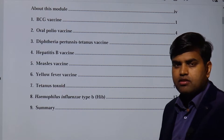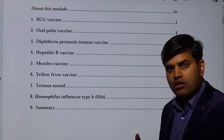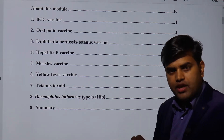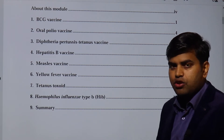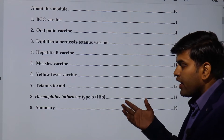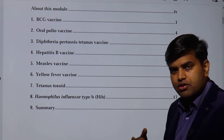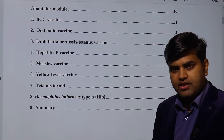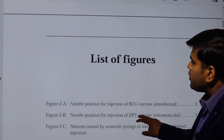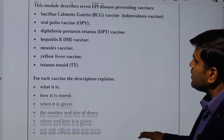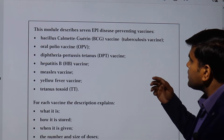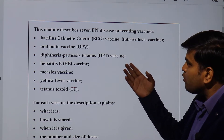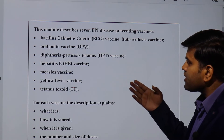The EPI schedule is known as the Essential Program on Immunization in some countries and as the Expanded Program on Immunization in others. It is present all over the world and every child born needs to be vaccinated according to it. Some developed countries give additional vaccines, but not fewer. EPI-preventable diseases include tuberculosis, polio, diphtheria, pertussis, tetanus, hepatitis B, measles, and yellow fever.